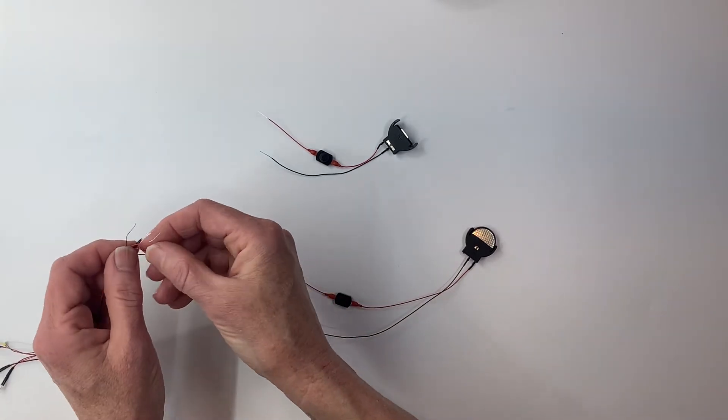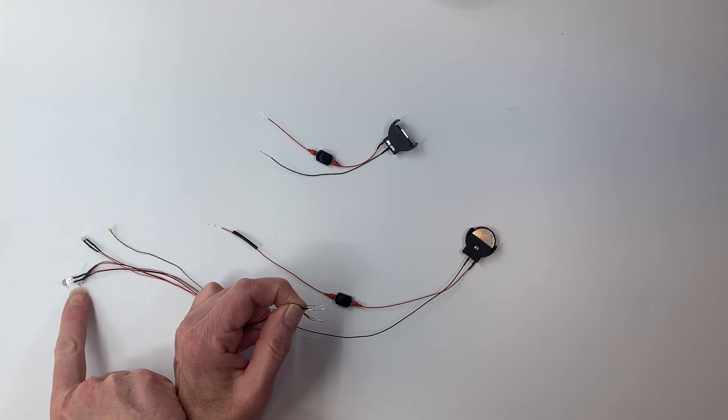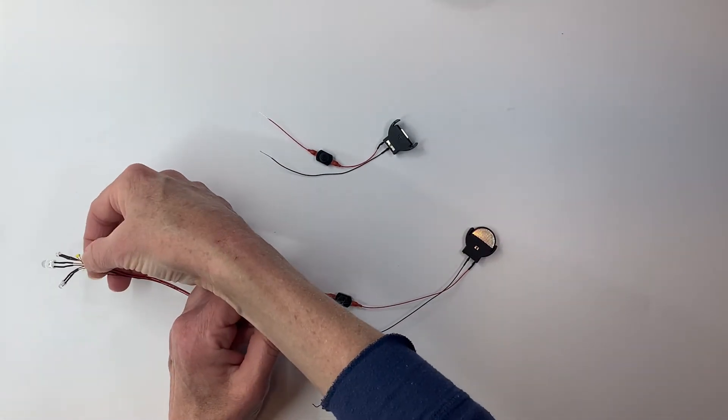So first I put on the shrink tube onto the coin cell holder. Then I twist my red wires together on all of my lights and you'll see here I have a five millimeter, three millimeter, 1.8 millimeter, and a chip just to give an example of some three-volt lights.